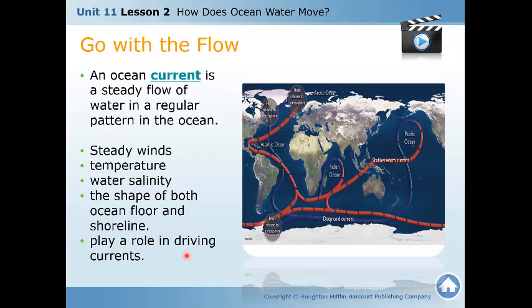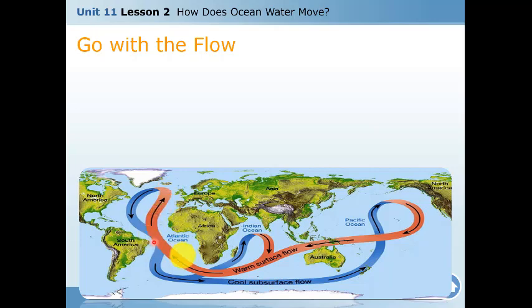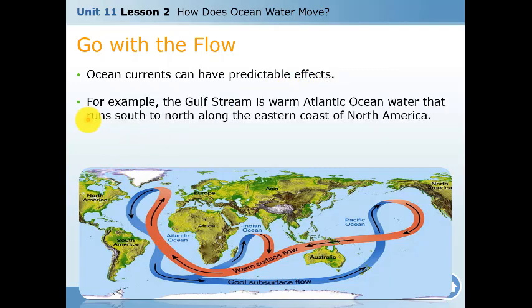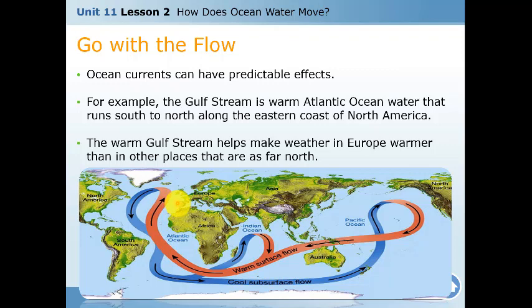Steady winds, temperature, water salinity, the ocean floor shape, and the shoreline all play a role in driving currents. The warm current — shown in red — moves along the surface, then transforms into a cool subsurface flow, moves to the bottom, and comes back up again. The warm Gulf Stream helps make the weather in Europe warmer than other places at the same latitude.